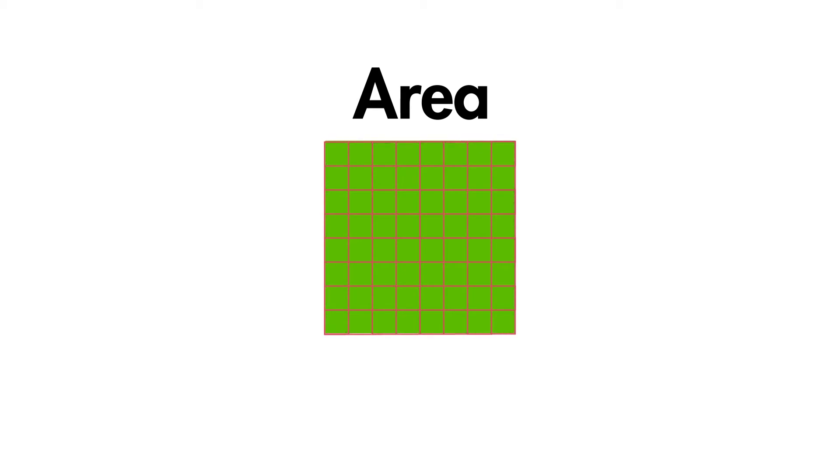Area is the amount of space a shape covers. You find the area of a square or rectangle by multiplying the length times the width. The area is measured in square units.